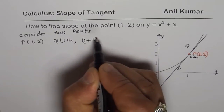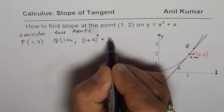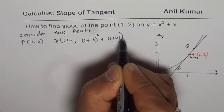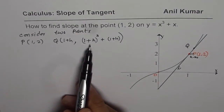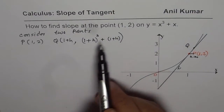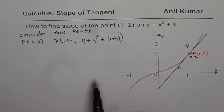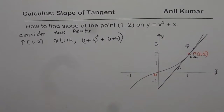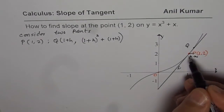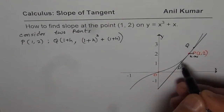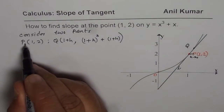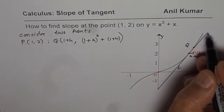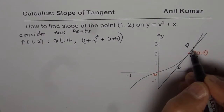So the y value of Q becomes (1 plus h) cubed plus (1 plus h). You get the concept: if x value is 1 plus h, then y value is found by replacing x with 1 plus h. That is how we get the x and y values of the second point on the curve. Now, if point Q is very close to P, this line will not be a secant but a tangent.